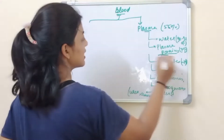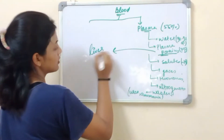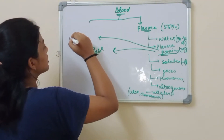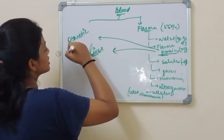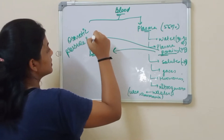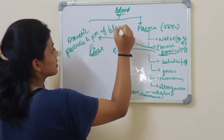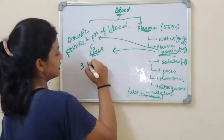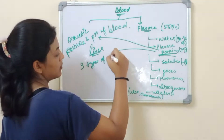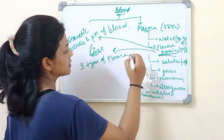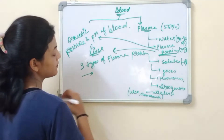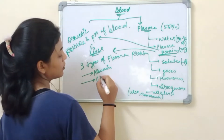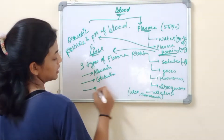These plasma proteins are synthesized by the liver, and plasma proteins are essential for maintaining the osmotic pressure and pH of blood. There are 3 types of plasma proteins: albumin, globulin, and fibrinogen.